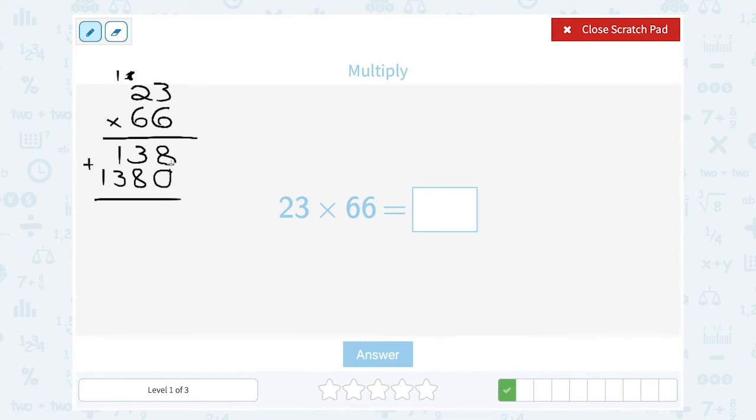And again, just make sure you're lining up the ones place, the tens place, the hundreds place, and so on. So in my ones place, 8 plus 0, that's going to give me 8. In my tens place, 3 plus 8 gives me 11. So I'm going to write my 1 and carry the 1. 3 plus 1 is 4, plus the extra 1 is 5.